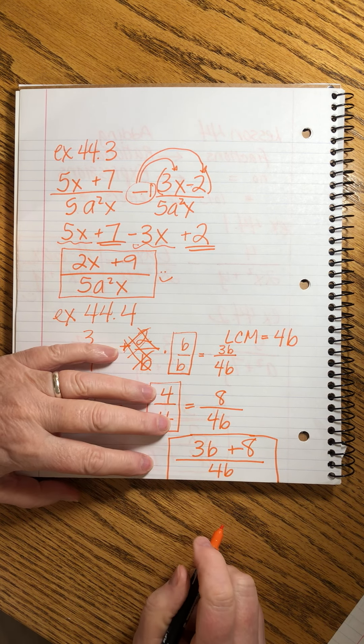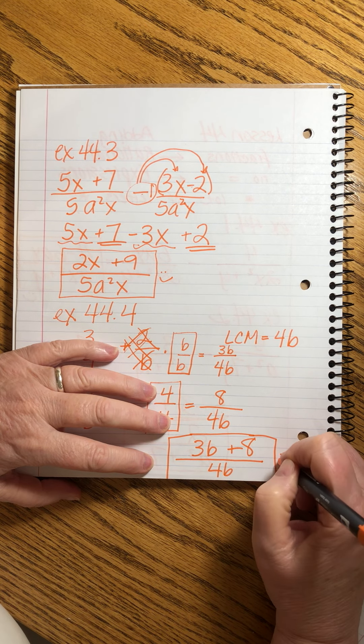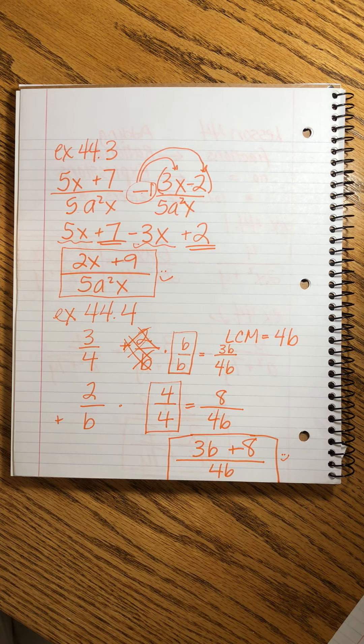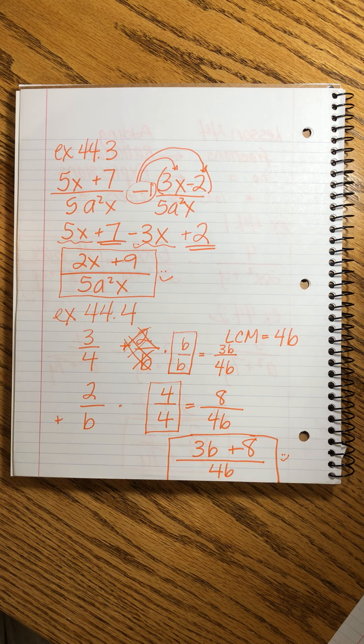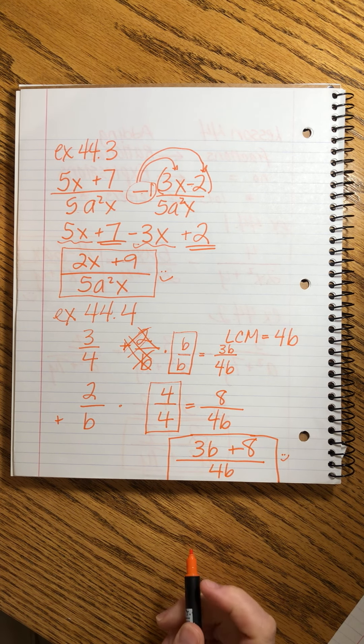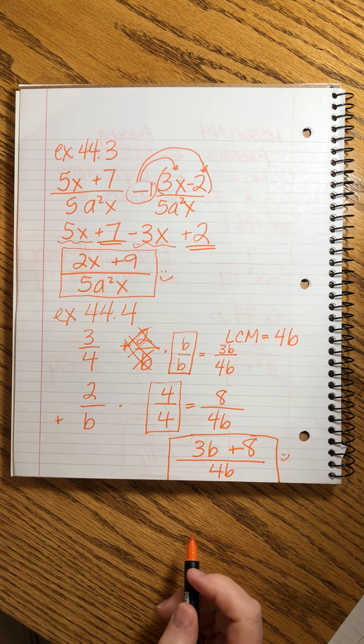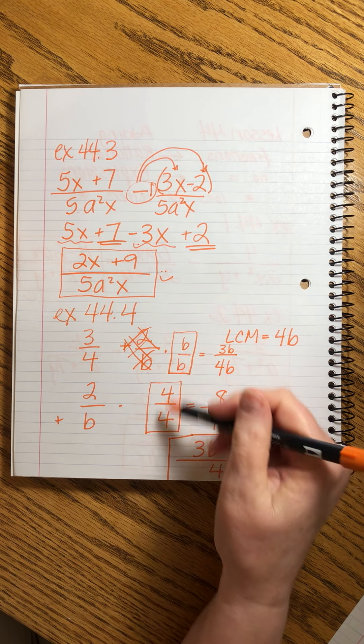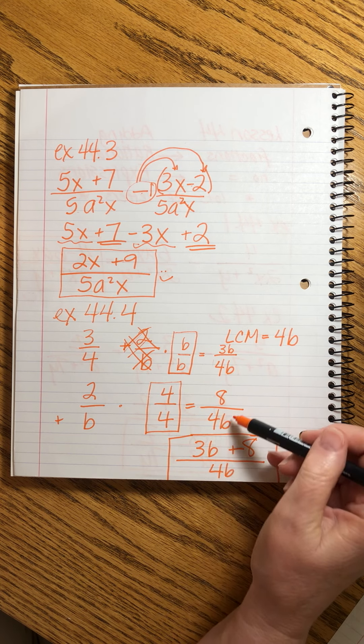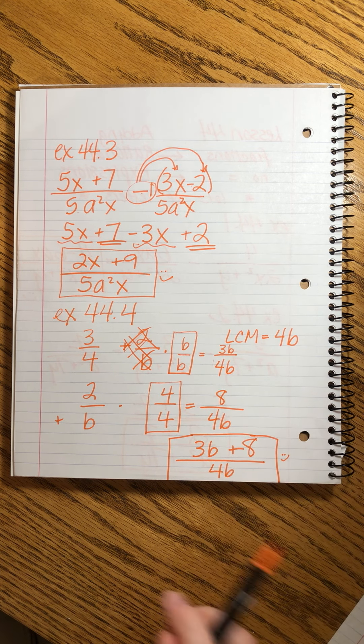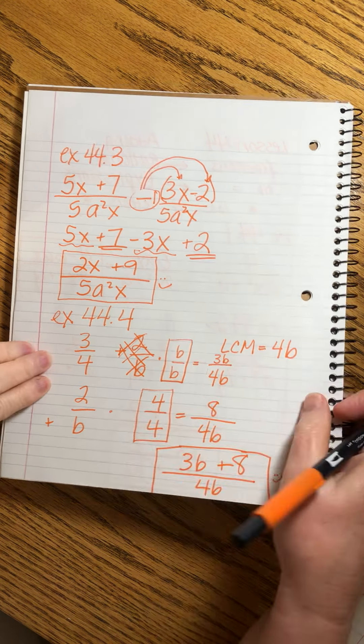All right. So when we do need to adjust our denominators, and boy, are we going to, we use the very same strategies that we did when we had all numbers. Find the LCM, multiply by the missing pieces, get the denominators to match, and then you can add whatever is in your numerators. Let's do another one.